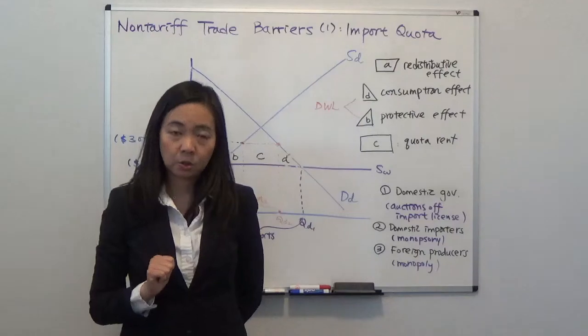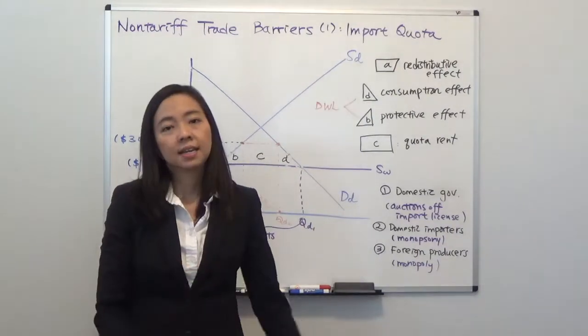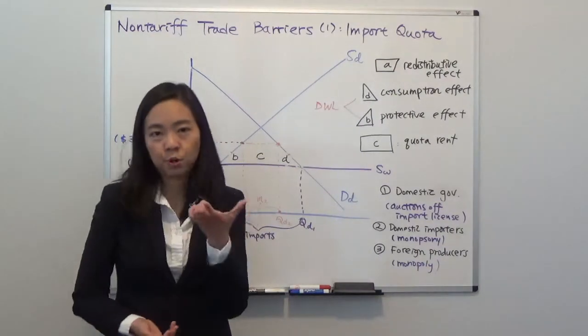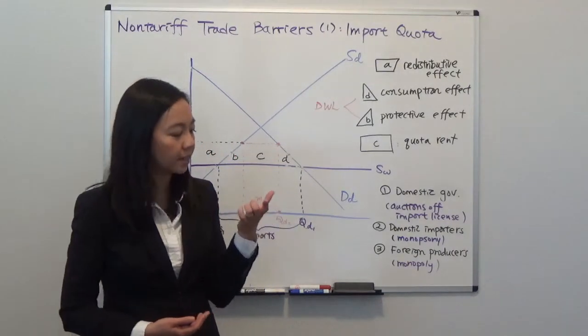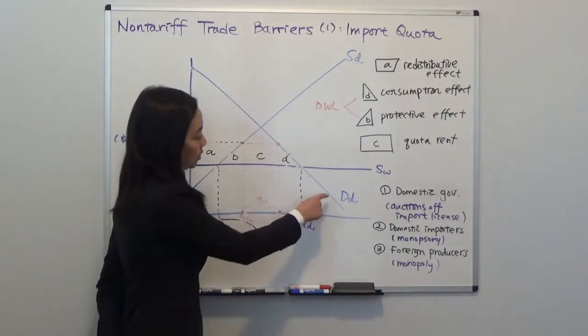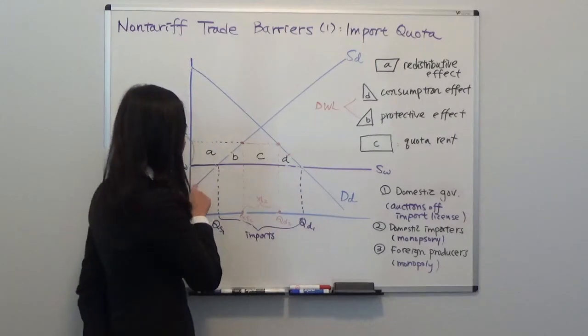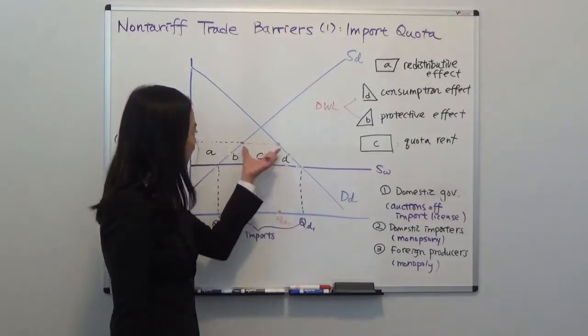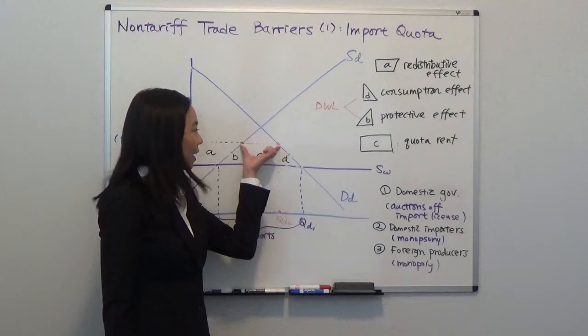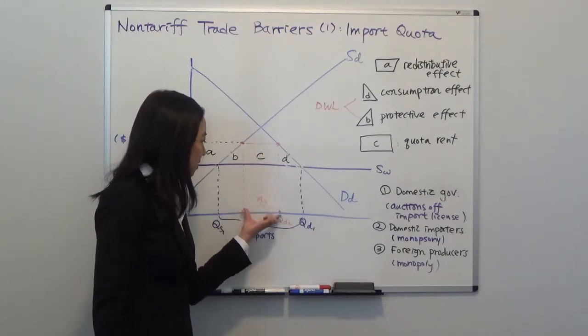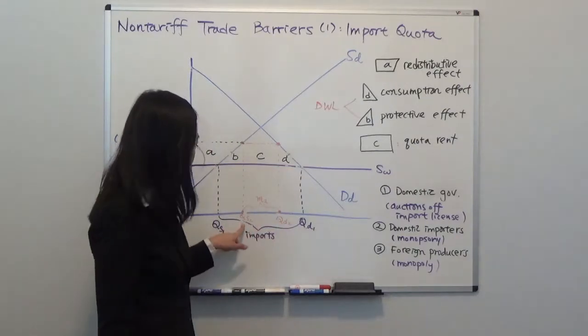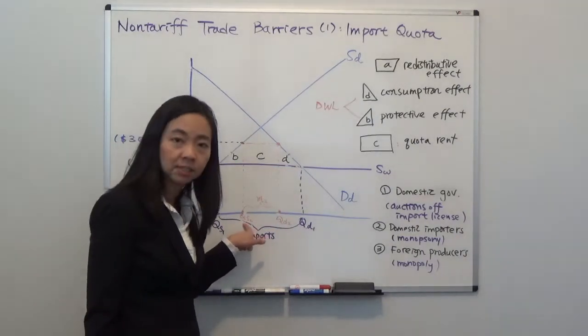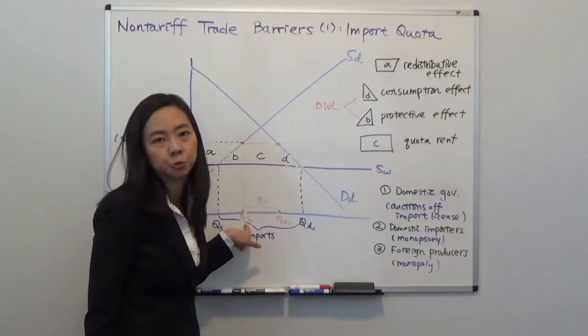Now suppose the government is going to impose an import quota saying you cannot import more than this amount, say M2. So you're going to find the distance between your domestic demand curve and domestic supply curve that gives you exactly M2.